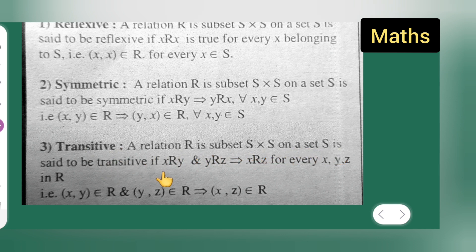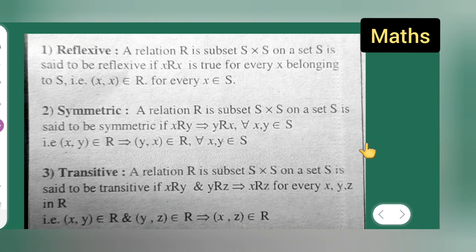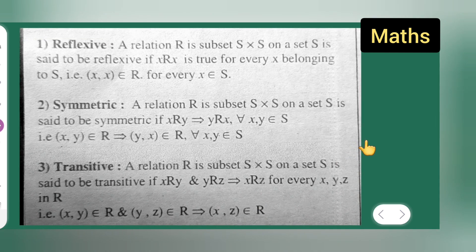And for transitive: a relation R ⊆ S×S on a set S is said to be transitive if X is related to Y and Y is related to Z implies X is related to Z, for every X, Y, Z in R. That is, (x,y) ∈ R and (y,z) ∈ R implies (x,z) ∈ R. You all can take down this definition. I hope you all have understood — thanks for watching.